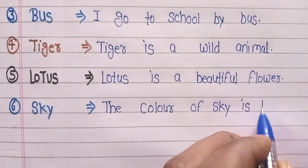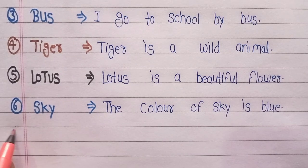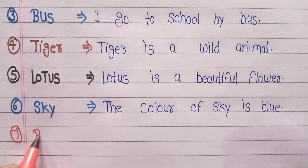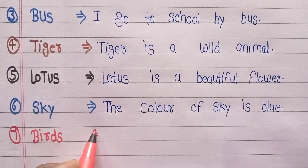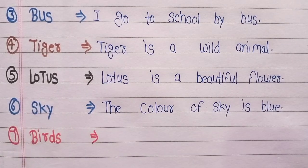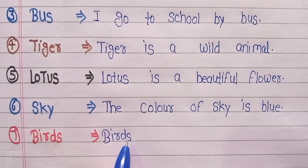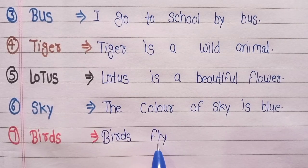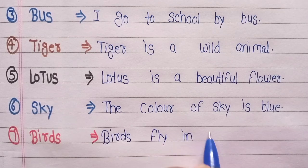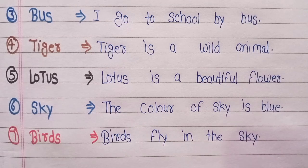Sixth line: Sky — The color of sky is blue. Seventh line: Birds — Birds fly in the sky.